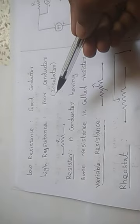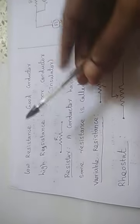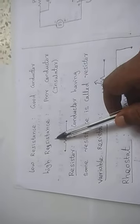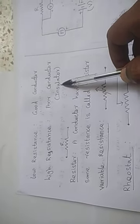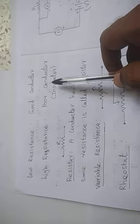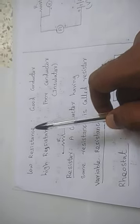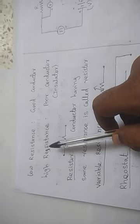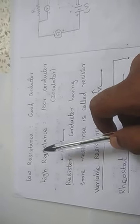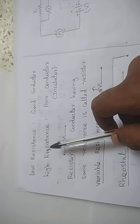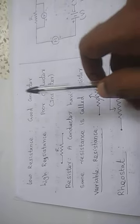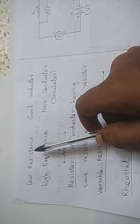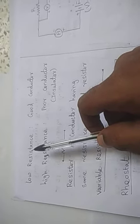Based on resistance, we can classify materials. Those materials which have very low resistance are called good conductors. Those materials which have high resistance are called poor conductors. In poor conductors — that is, in insulators — there is no flow of current, that is no flow of free electrons. If there is high resistance available in that material, there is no possibility of flow of free electrons. Hence, that material does not allow current to pass through it, so it is called an insulator. For conductors, the flow of current is more because it has very low resistance.